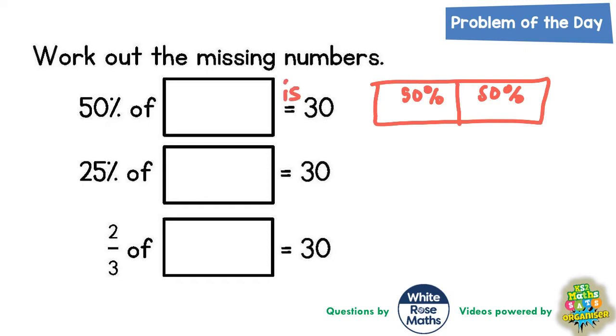50 is 30, so if 50 is worth 30, that means the other 50 is worth 30. And the missing box is the whole thing, so if both boxes are worth 30, the whole thing must be worth 60.